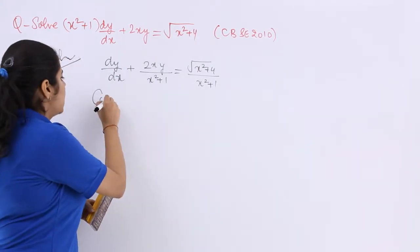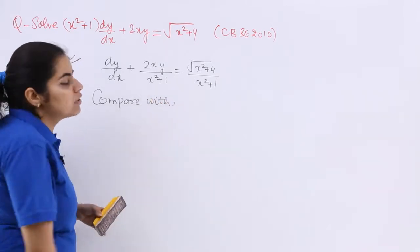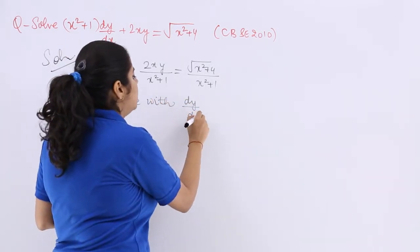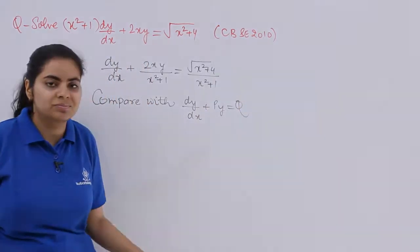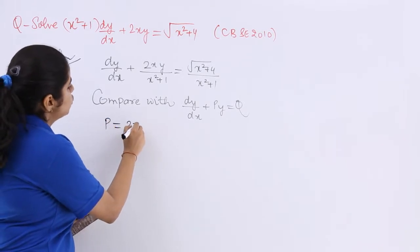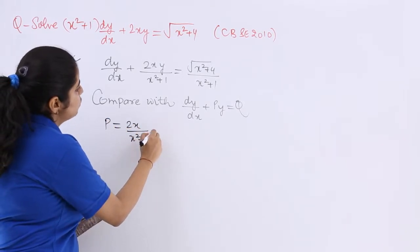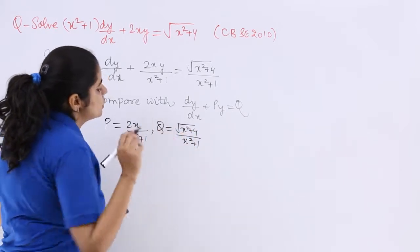Now I can say compare with the general form. General form is dy/dx + py = q. And what should be my p and q? My p from here should be 2x/(x²+1). My q should be √(x²+4)/(x²+1).